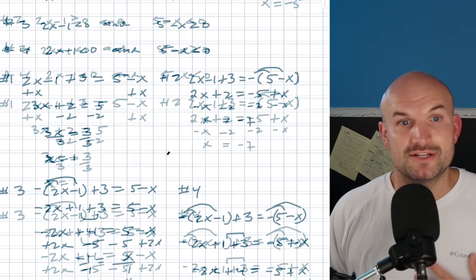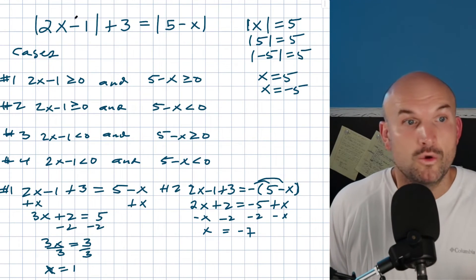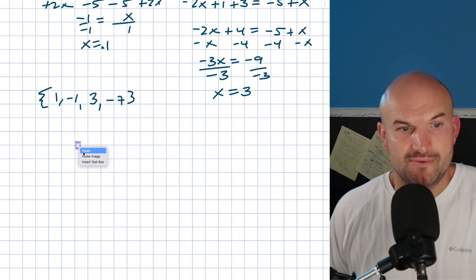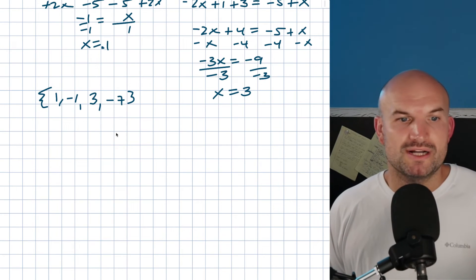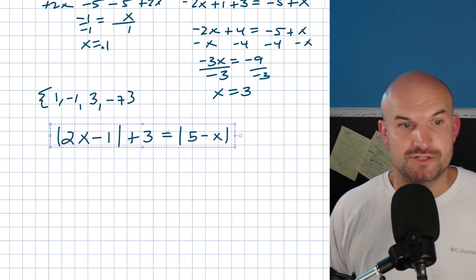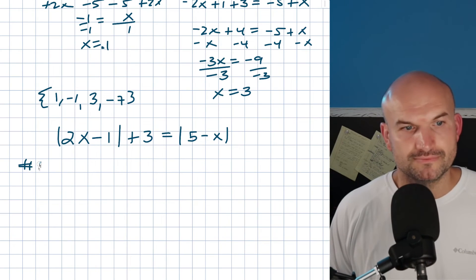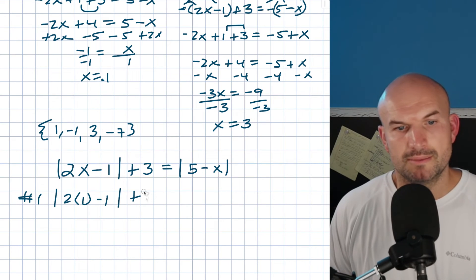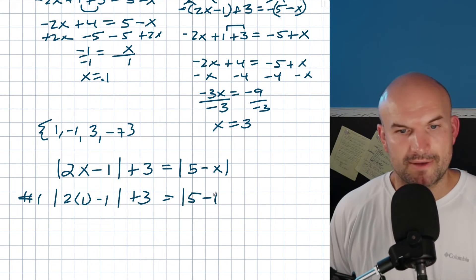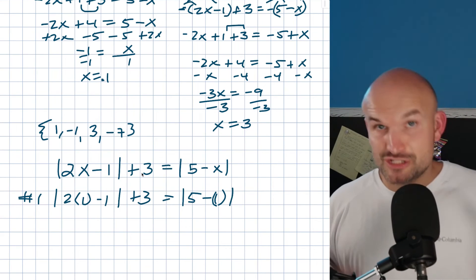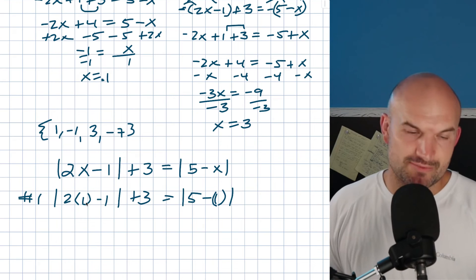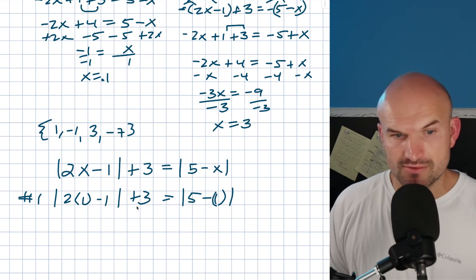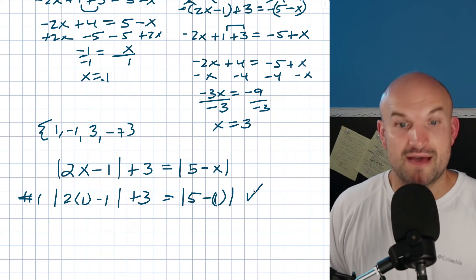Let's verify case one, x equals positive 1. We compute the absolute value of 2 times 1 minus 1, plus 3. That's the absolute value of 1, which is 1, plus 3 equals 4. On the right, the absolute value of 5 minus 1 is the absolute value of 4, which is 4. So 4 equals 4 — that one checks out.